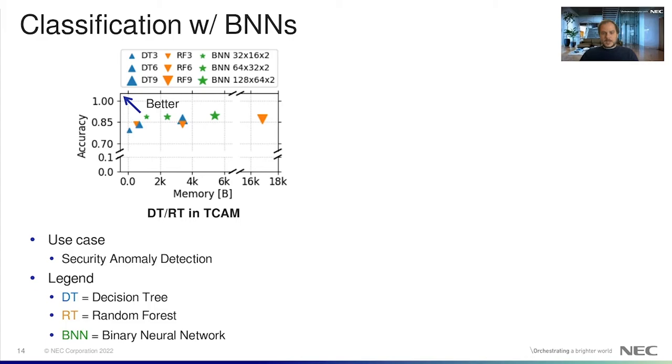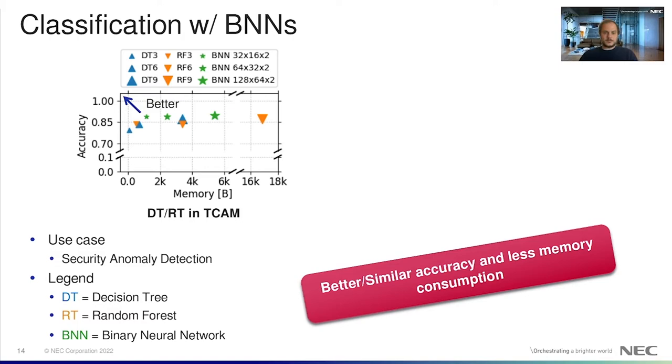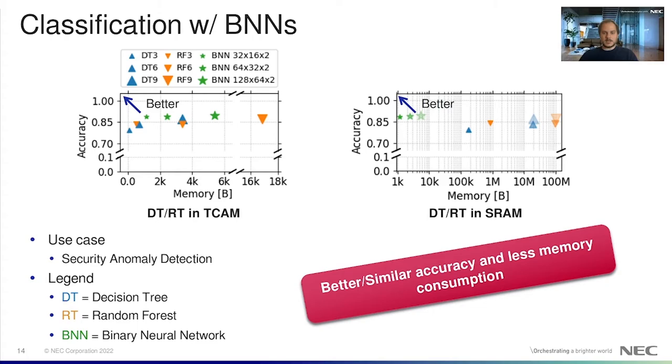But can such simple neural networks be used for traffic classification? It turns out that they can, and they are also pretty good. In this experiment, we compare accuracy and memory consumption for three different architectures: BNNs, decision trees, and random forests in a security anomaly detection use case. Note that two out of three decision trees and random forests won't fit in the TCAM. Decision trees and random forests with depth nine achieve accuracy above 90% using 3.4 and 17 kilobytes of TCAM, while the smallest BNN achieves over 91% of accuracy using just 1.2 kilobytes of SRAM. What if you use SRAM instead of TCAM? Even the smallest model requires at least 173 kilobytes of SRAM.